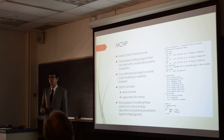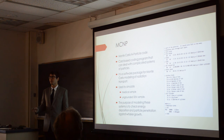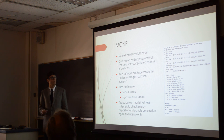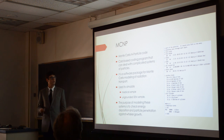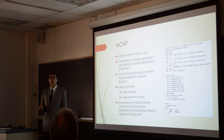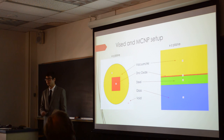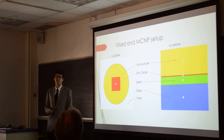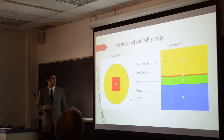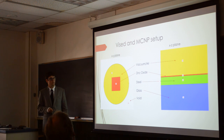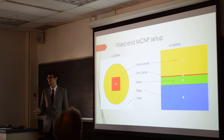Another part of my project was determining whether there was a relationship between metal whisker growth and the energy deposited in the sample. I wrote a code using MCMP, which is a Monte Carlo N-particle code — a software package for Monte Carlo modeling of radiation transport. I modeled two samples: the medical sample and an ungrounded SEM sample. The first step was to design my samples. Here is the XY plane looking down on the top of the sample, and this is the XZ plane. It had a zinc oxide layer with steel underneath it and glass underneath that. Each sample had a different surrounding environment.